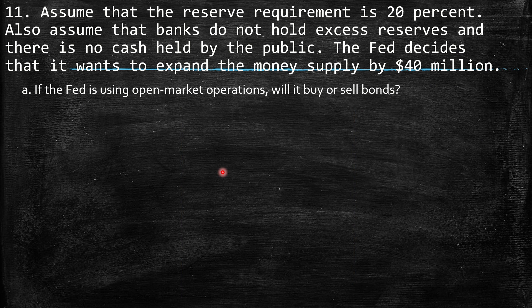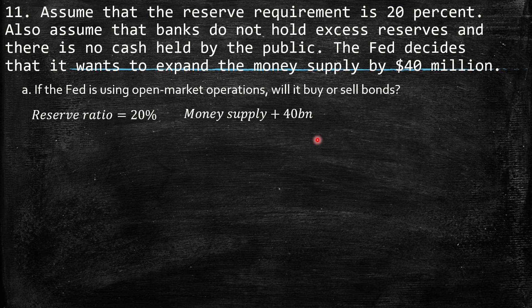Question 11: Assume the reserve requirement is 20%, banks don't hold excess reserves, and there is no cash held by the public. The Fed wants to expand the money supply by $40 million. Part A: If the Fed is using open market operations, will it buy or sell bonds? The Fed should buy bonds — when they buy bonds, they inject money into the economy, so the money supply increases.